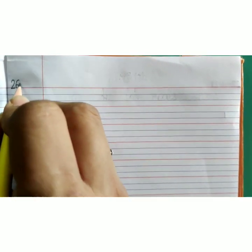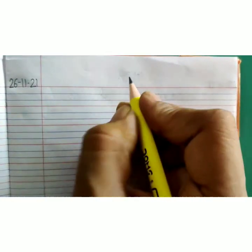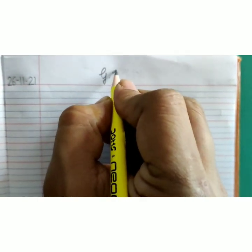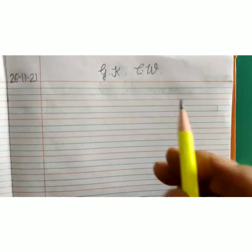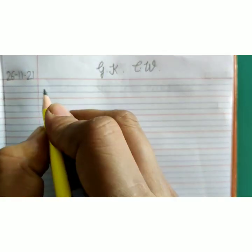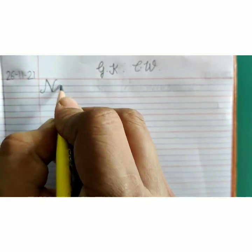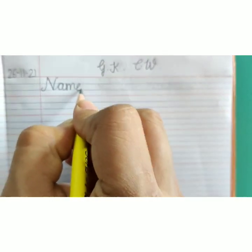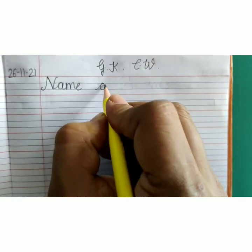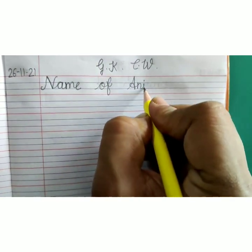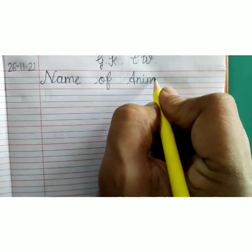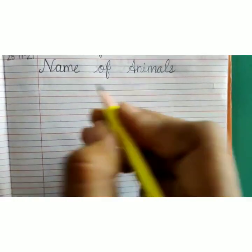Today's classwork is name of animals. Write down today's date in this margin, 26-11-21. At the top write down capital G dot capital K, one finger space capital C dot capital W. General knowledge classwork. Near the margin write down heading N-A-M-E, name, O-F of A-N-I-M-A-L-S, name of animals.